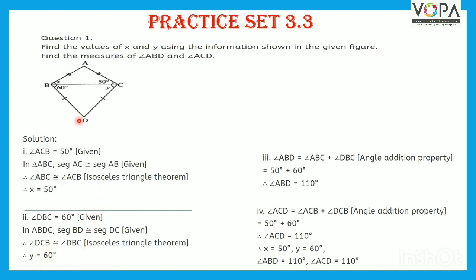Now, angle ABD is equal to angle ABC plus angle DBC by the angle addition property. So this is equal to 50 degrees plus 60 degrees. Therefore, angle ABD is equal to 110 degrees.